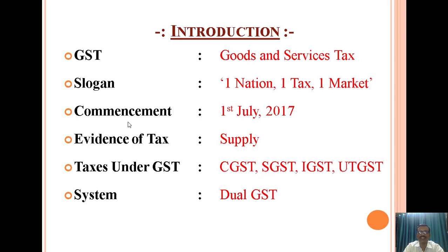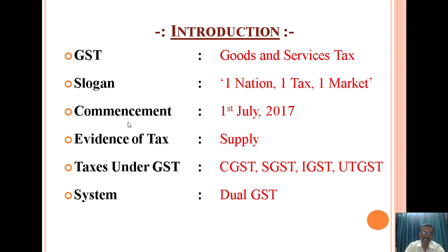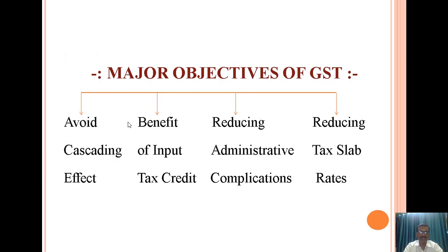Basically, under GST there are four types of taxes. Number one, CGST means Central Goods and Services Tax. Number two, SGST, State Goods and Services Tax. Number three, UTGST, that is Union Territory Goods and Services Tax. And fourth, IGST, that is Integrated Goods and Services Tax. Integrated means combination of two taxes, either CGST and SGST, or CGST and UTGST.